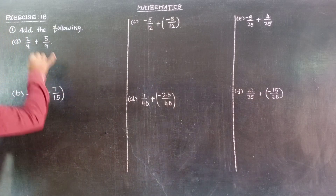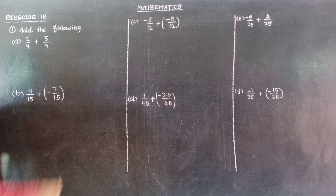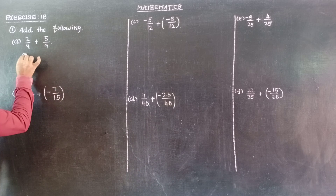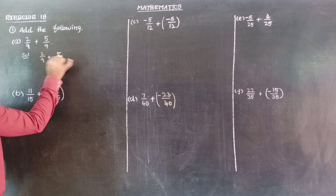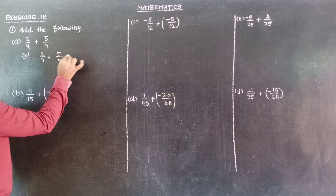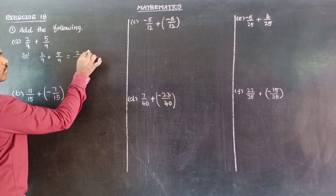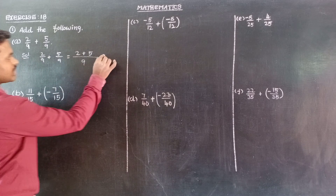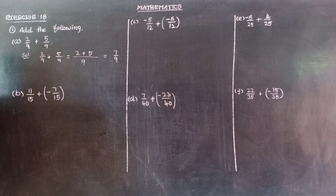So first one: 2 by 9 plus 5 by 9. So 2 by 9 plus 5 by 9 — denominators are same, so we can add the numerator directly. 2 plus 5 by 9, 2 plus 5 is 7, so 7 by 9. The answer is 7 by 9.